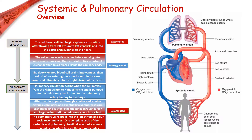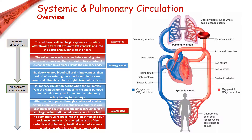Pulmonary circulation begins when the cell moves from the right atrium to the right ventricle and is pumped into the pulmonary trunk, then to the pulmonary artery leading to the lungs. After the blood passes through smaller and smaller arteries, capillaries, and eventually the alveolus, gases are exchanged and it then exits the lungs through larger and larger veins until the pulmonary vein is reached. The pulmonary vein then drains into the left atrium and our cycle recommences. One complete cycle of the systemic and pulmonary circuits takes about a minute depending on which tissue the cell oxygenates.